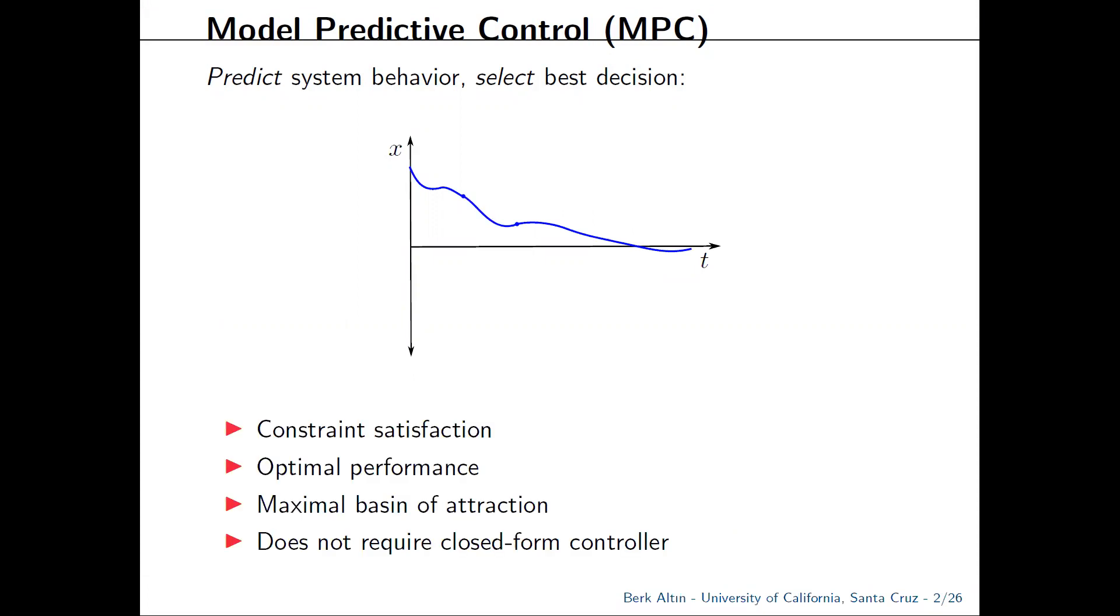There are a number of advantages to MPC, and the theory is well-established in discrete time and somewhat well-developed in continuous time. What we noticed is a severe lack of theory for systems with hybrid dynamics, where the state can evolve continuously as well as discretely, and that's where our work comes in.